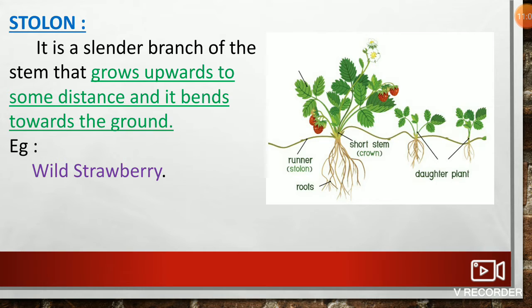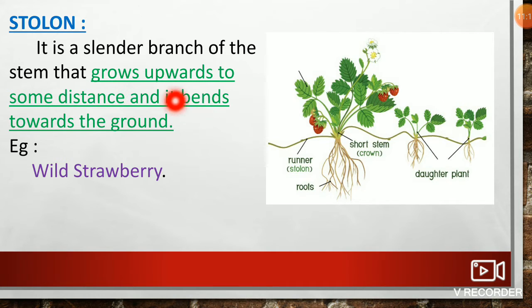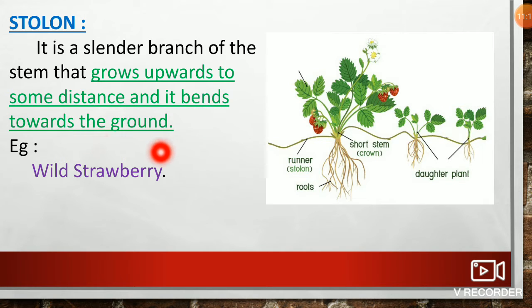Second type: stolon. A stolon is a slender branch of the stem that grows upwards to some distance and then bends towards the ground. An example of stolon is wild strawberry.